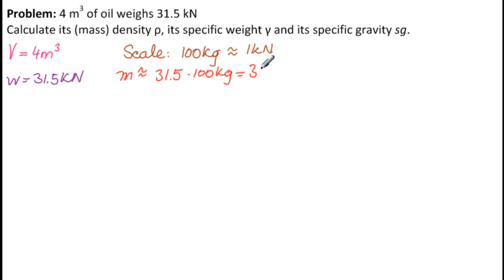Which is 3,150 kilograms. So for 4 meters cubed of oil, I have approximately 3,150 kilograms. That's lighter than water, because if it was water, it would be 4,000 kilograms. So we're looking at something that's lighter than water, and we should keep that in mind.